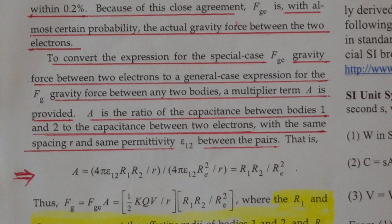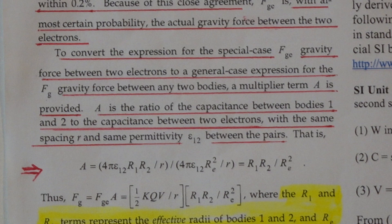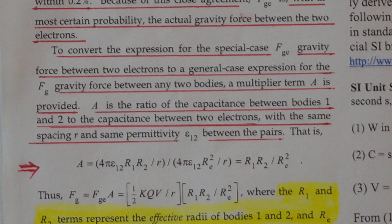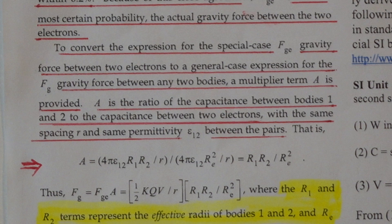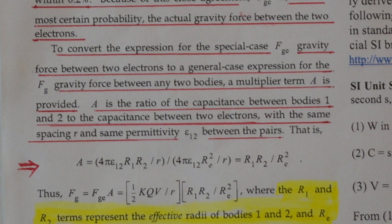Here is the first really big error — this is the fatal error. It says to convert the expression for the capacitance for the special case F of GE, that's a force between two electrons, to a general case expression for F of G, the gravitational force between any two massive bodies. So he first derives the gravitational force between two electrons, and then creates this fudge factor A that takes it from the gravitational force between two electrons to the gravitational force between any two general masses.